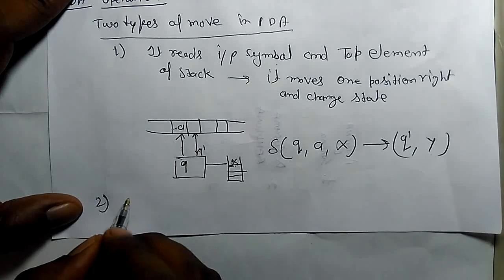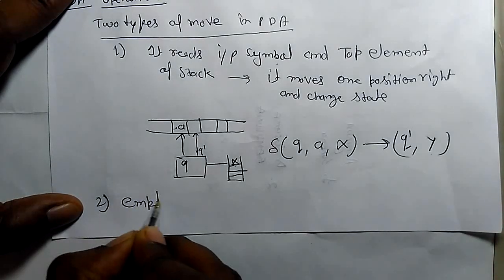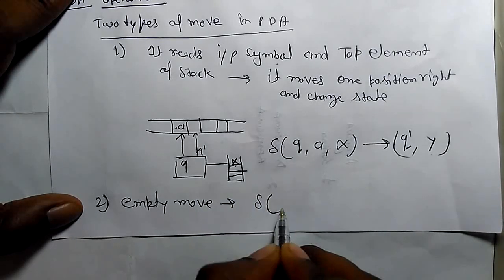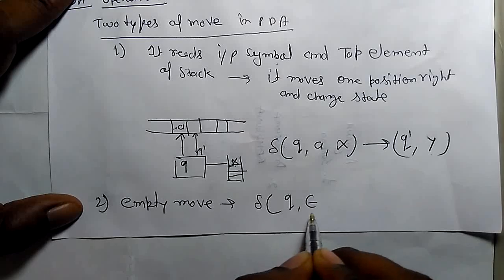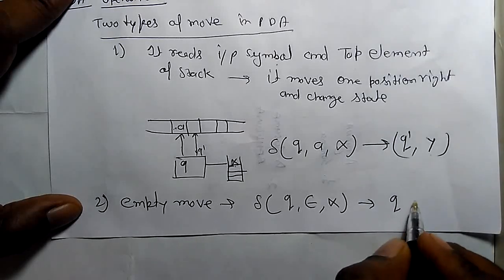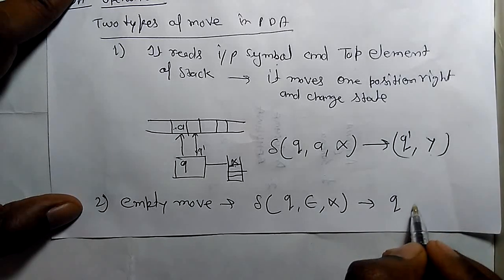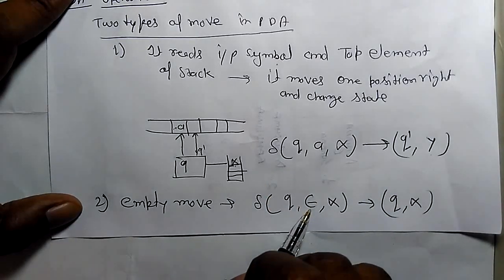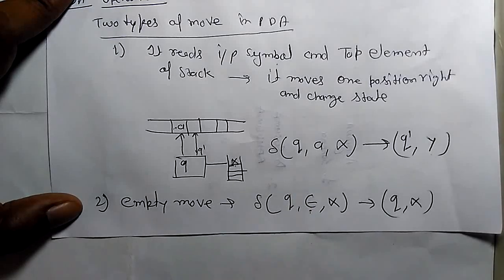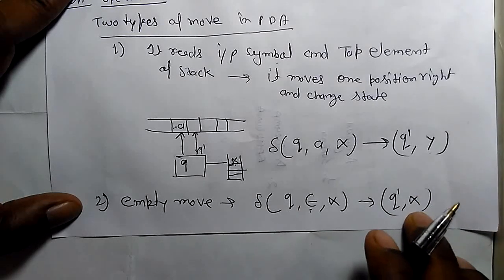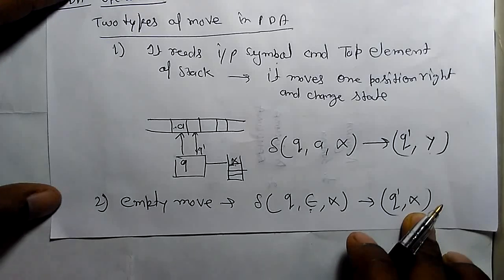The second move is the empty move (epsilon move). The transition function says you do not read any input symbol, but there is a top of the stack X, and you do not move the read head. You change the state, and you may or may not change the top of the stack.